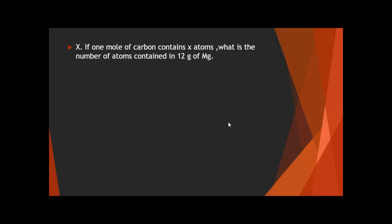Question 10: if one mole of carbon contains X atoms, what is the number of atoms in 12 grams of magnesium? It's a tricky question. One mole of any substance contains Avogadro's number of atoms, but here we suppose one mole of carbon contains X atoms. Therefore one mole of magnesium also contains X atoms. The molar mass of carbon is 12 g/mol and the molar mass of magnesium is 24 g/mol (atomic mass 24 amu).